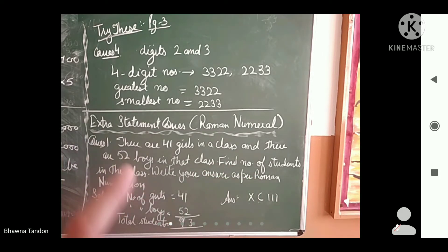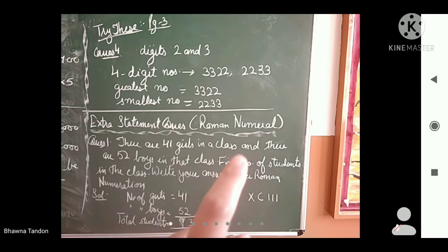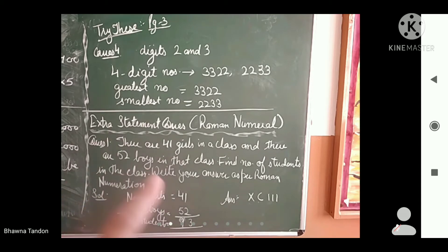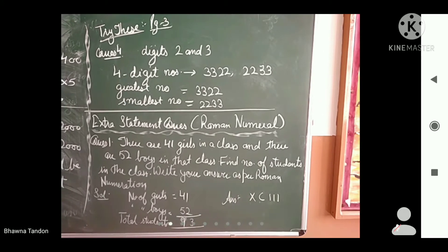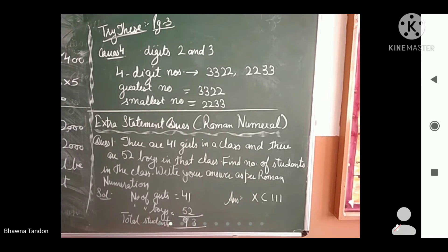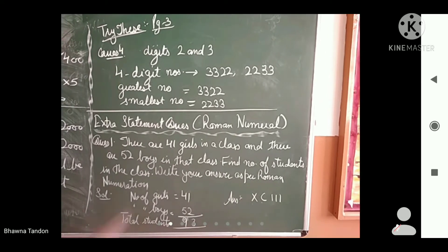First you have to add up the number of girls and number of boys to find the total number of students in the class. When you add them, the total is 93. Now you have to write 93 in Roman numeration. So how do you write 93? You will write 90 and then the Roman number for 3.